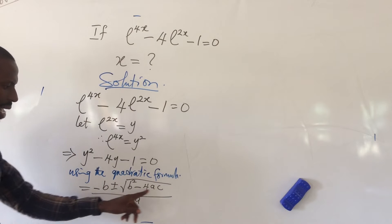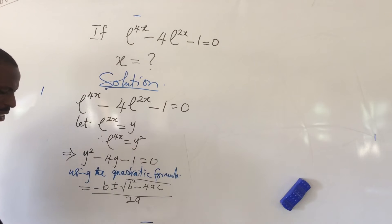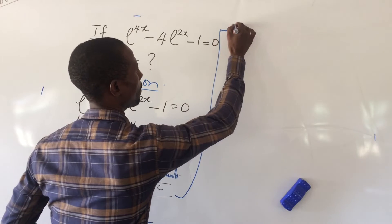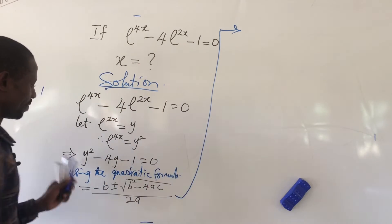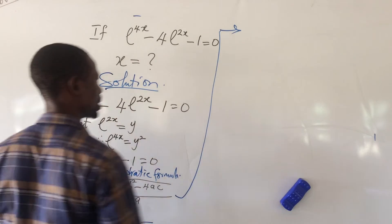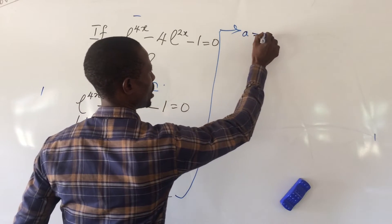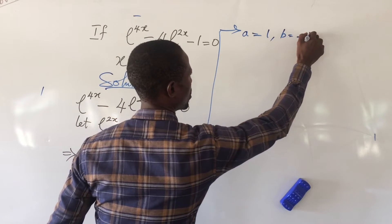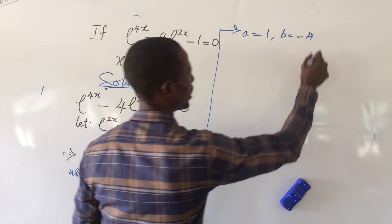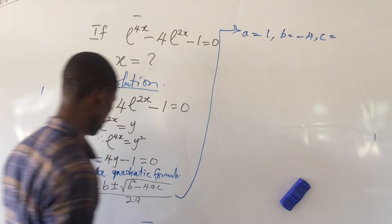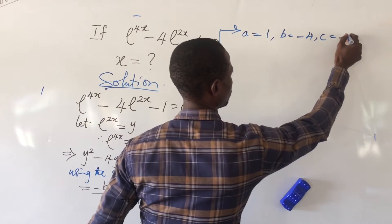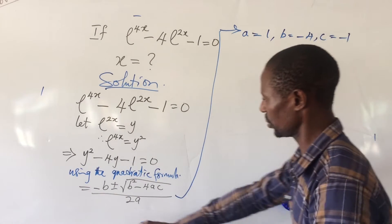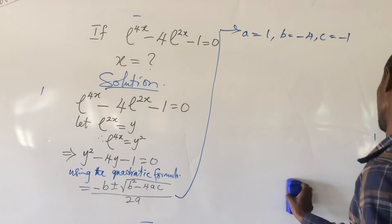The next thing we do is come to our equation and identify the values of a, b, and c. From here, the value of a is positive one, b is equal to minus 4, and c is equal to minus one. We go ahead and put all these into the formula.